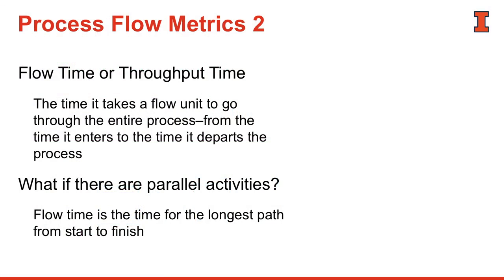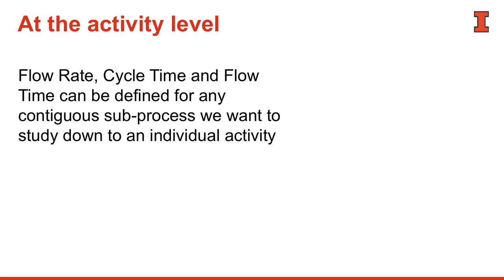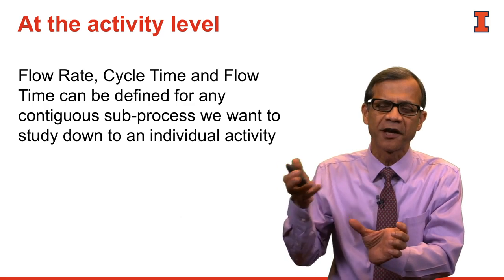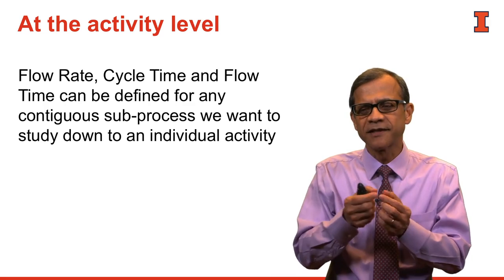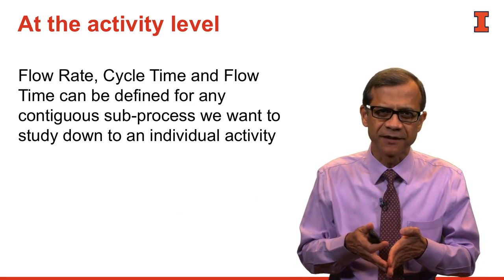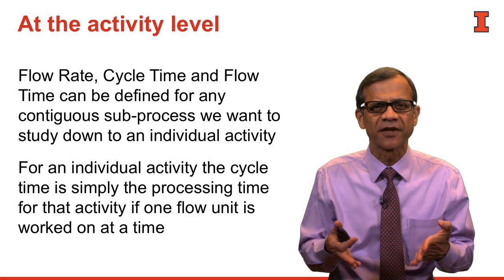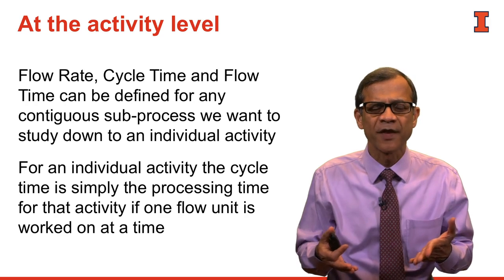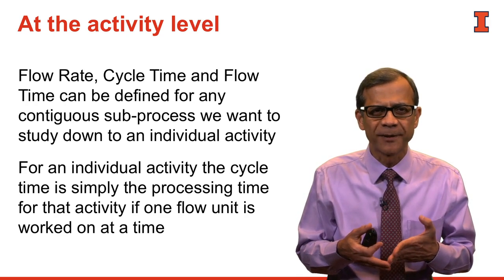What happens if we apply the same definitions of flow time, flow rate, and cycle time to each individual activity inside the process? Any contiguous subset of activities can be thought of as a sub-process. Since a single activity is a special case of a sub-process, for an individual activity the cycle time is simply the processing time for that activity, and the flow rate is one over the processing time.